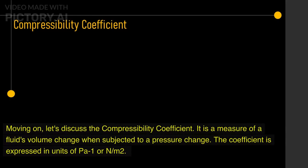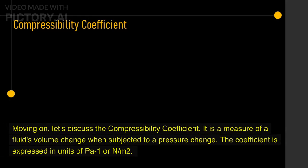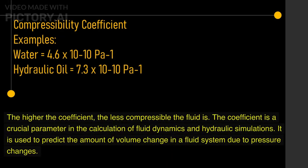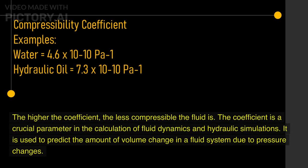Moving on, let's discuss the compressibility coefficient. It is a measure of a fluid's volume change when subjected to a pressure change. The coefficient is expressed in units of Pa⁻¹ or N per meter². The higher the coefficient, the less compressible the fluid is. The coefficient is a crucial parameter in the calculation of fluid dynamics and hydraulic simulations, and is used to predict the amount of volume change in a fluid system due to pressure changes.